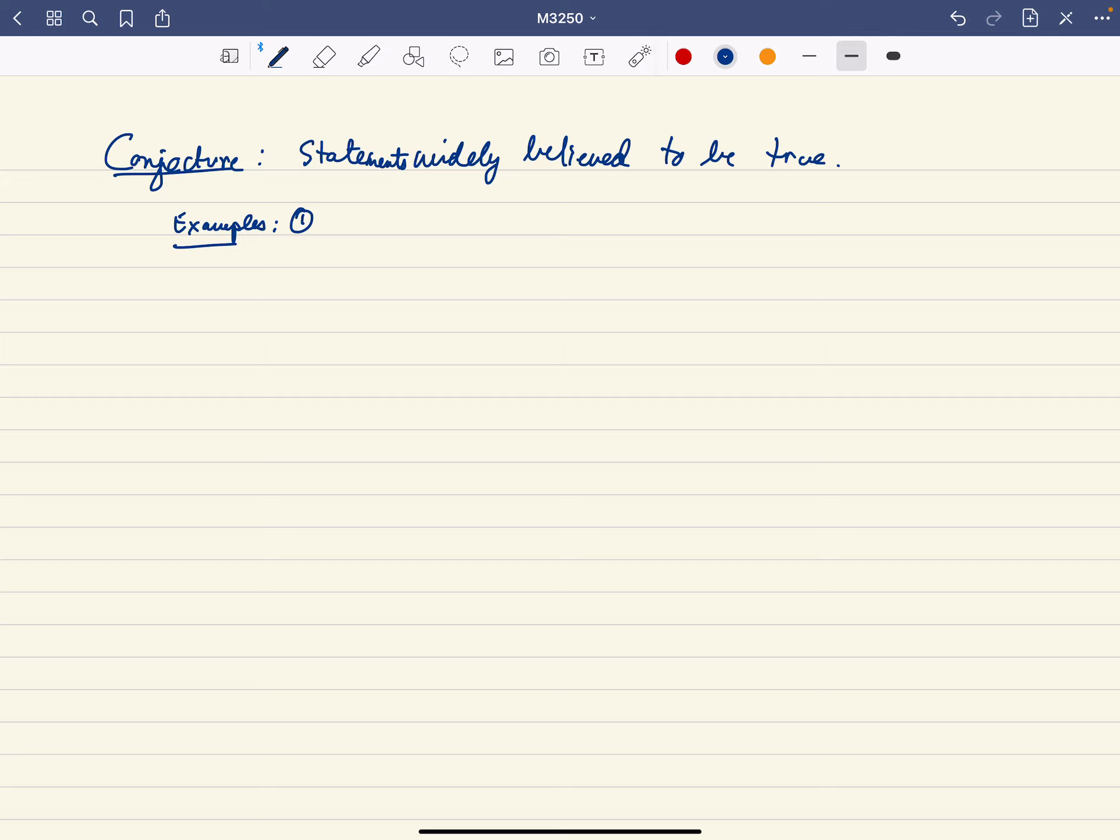I want to give you three examples of conjectures. The first is that π + e is irrational. It's actually not known; there's no proof that π + e is rational or irrational.